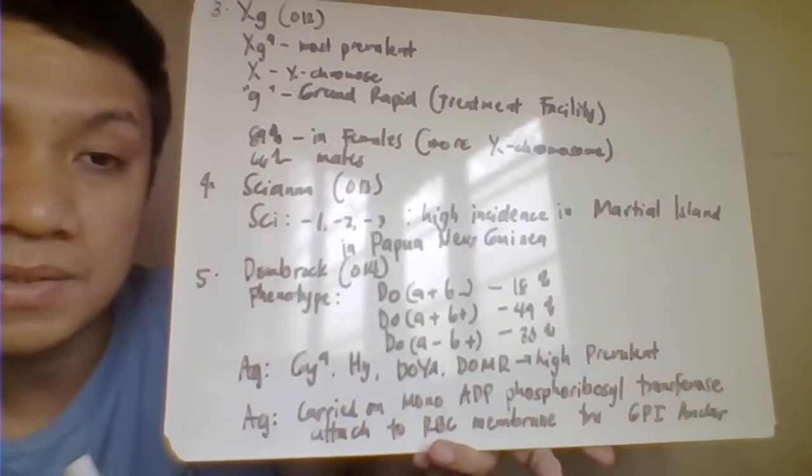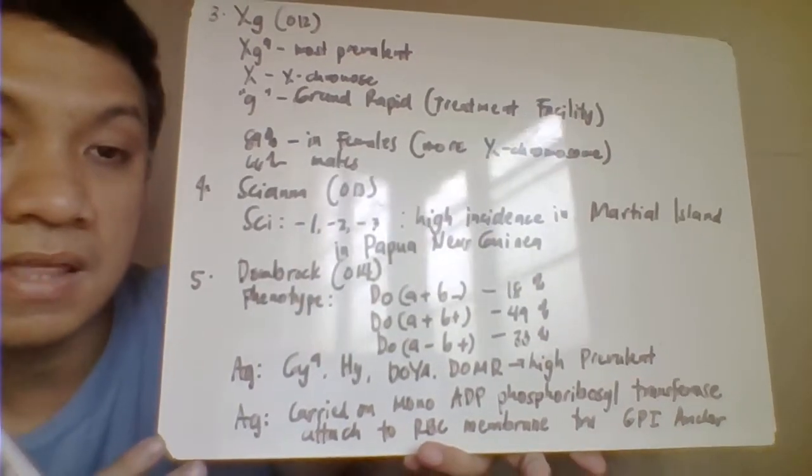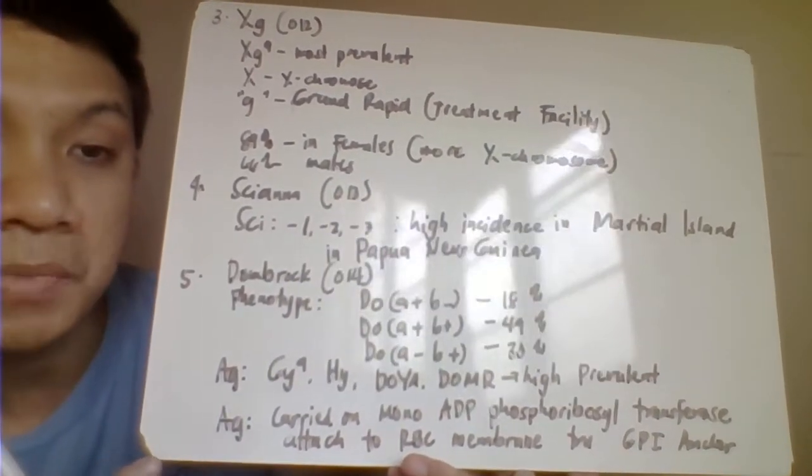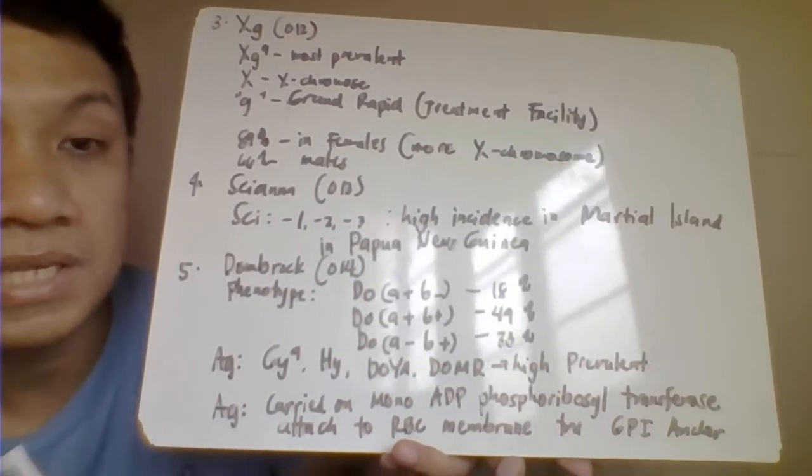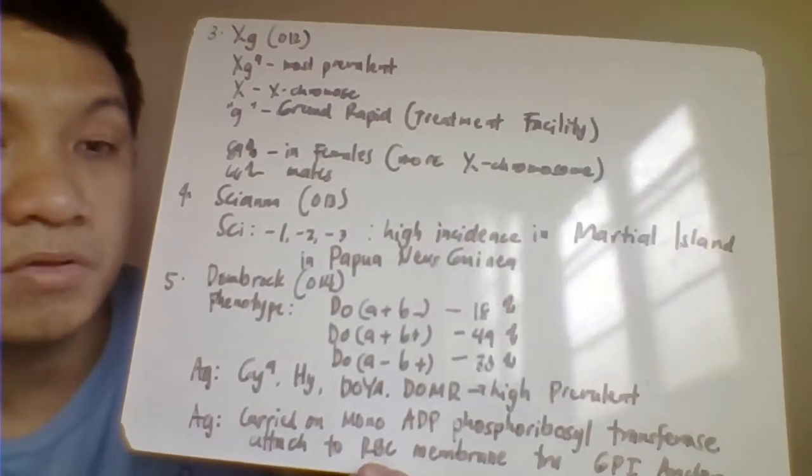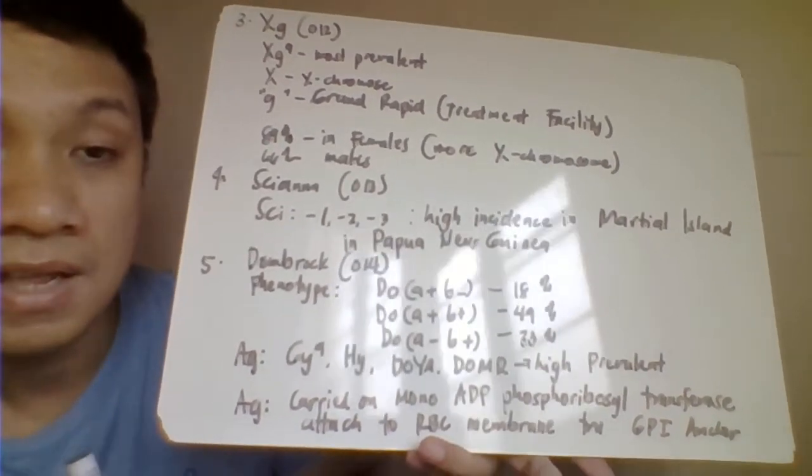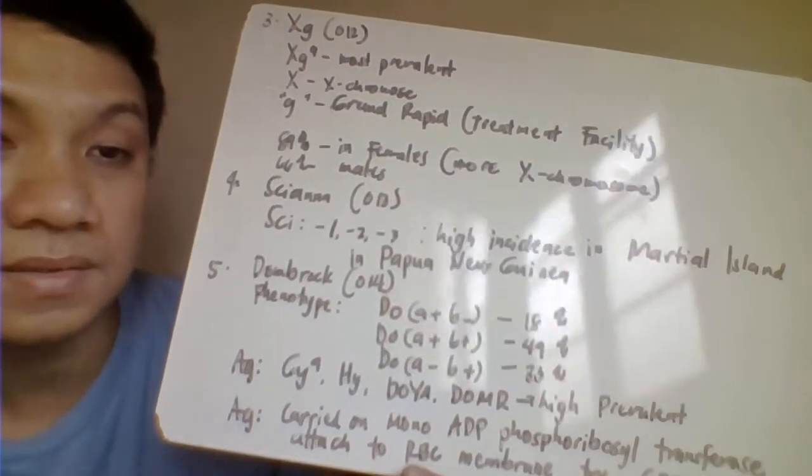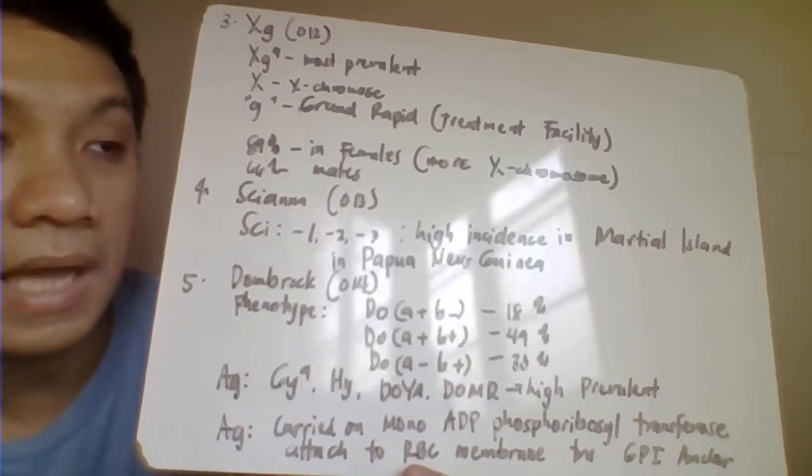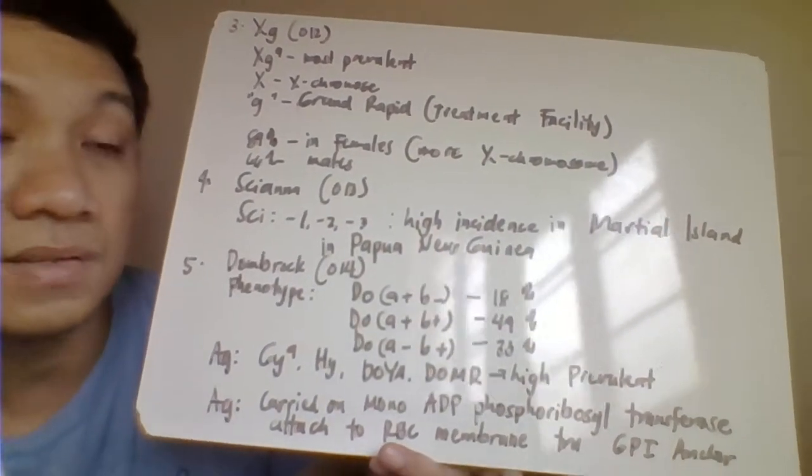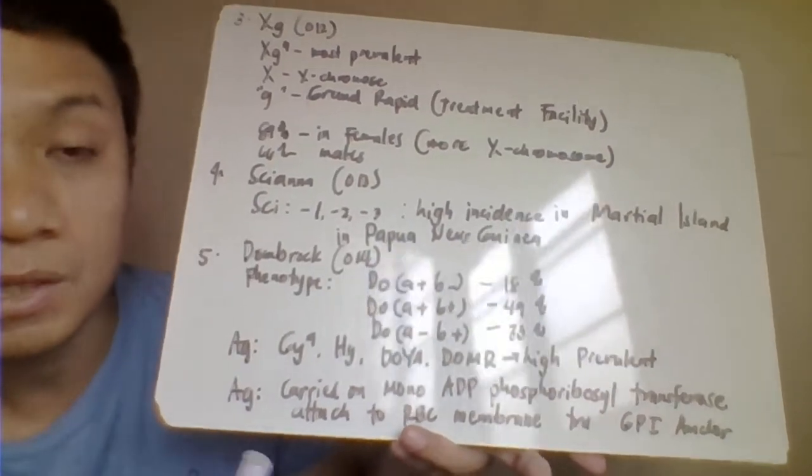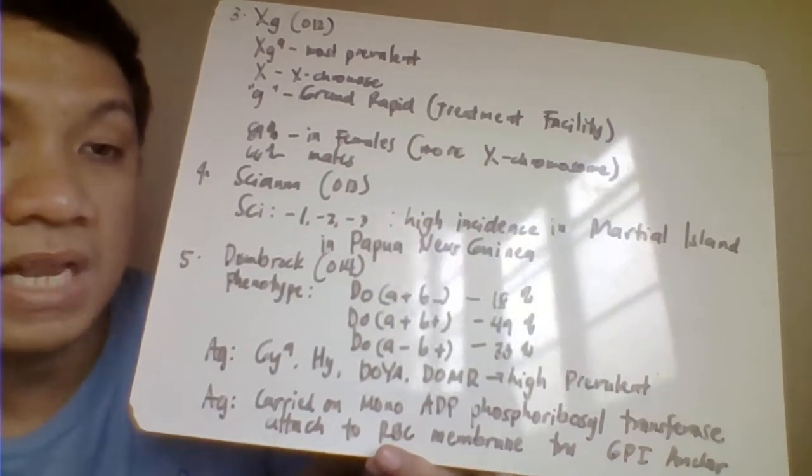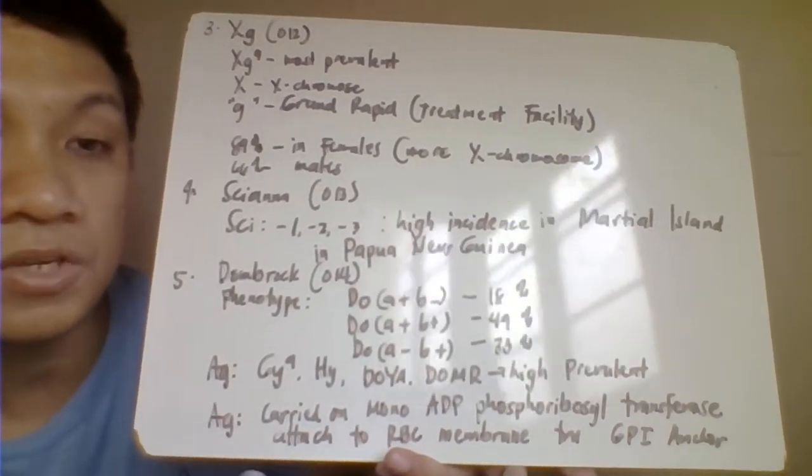This one is mostly found in the female population. That's why 89% of your XG A is found in the female population compared to the male at 66%. Because remember, females have two X chromosomes, males only have X and Y, one X and one Y chromosome. That would explain the higher prevalence among the female population compared to your male.